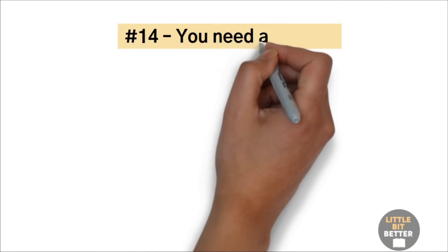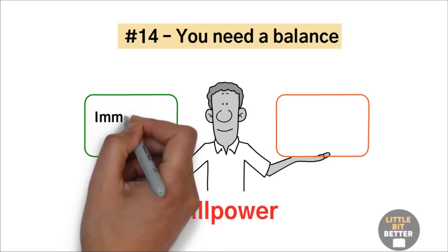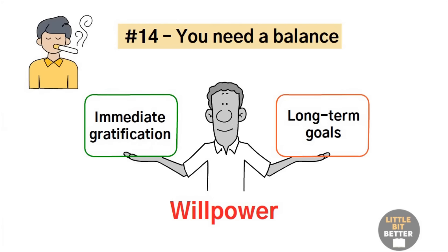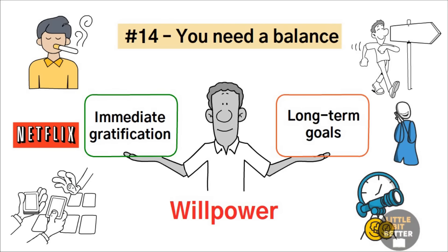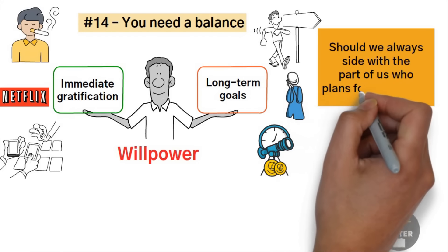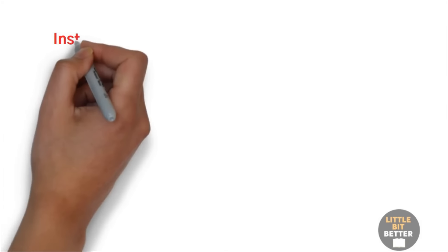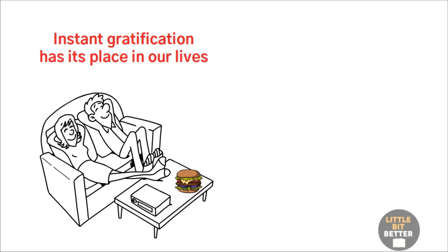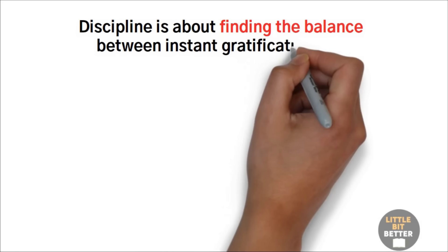Number 14, you need a balance. In a very simple way, when you are facing a willpower challenge, two parts of you are conflicting. One part wants to give in to immediate gratification. The other part of you is trying to protect your long-term goals. You see yourself in a dilemma. Smoke now or live longer. Watch my favorite series now or go to bed early and feel rested tomorrow. Gamble today or have more money when I retire. So, should we always side with the part of us who plans for the future? Not always. Yes, people who have better self-control and discipline are happier. They make their dreams and plans come true more often, make more money, and have better health. But instant gratification has its place in our lives too. We do need to do pleasurable things and have fun in the present, and eating a hamburger every now and then won't kill you. Without desires, we'd become depressed. Discipline is about finding the balance between instant gratification and long-term goals.